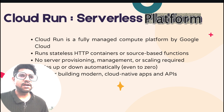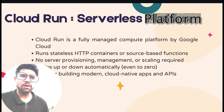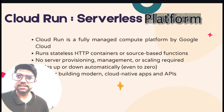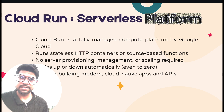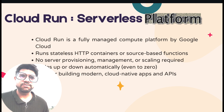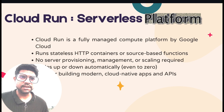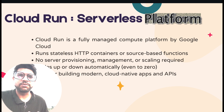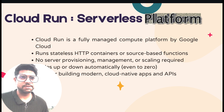With Cloud Run, GCP will take care of all the infrastructure-related things, such as scalability, memory, CPU, etc. Based on the load, it can scale up, and as soon as the load goes down, it can also decrease the instances and then go down to zero instances based on your configuration.